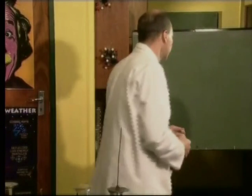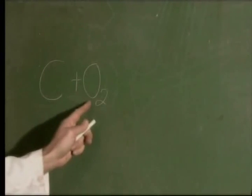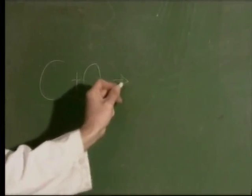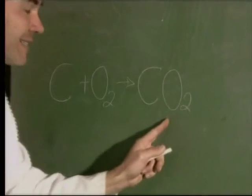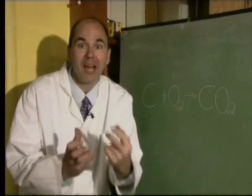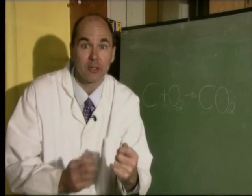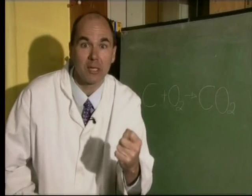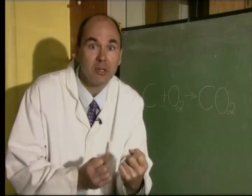Let's look at the equation to see if it gives us a clue to what's happening. Carbon reacts with oxygen to form an oxide of carbon. We write this as CO2, a colorless gas called carbon dioxide. Although we can't see it, we can test for it using clear lime water. When carbon dioxide is bubbled through lime water, it turns milky.